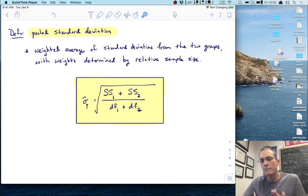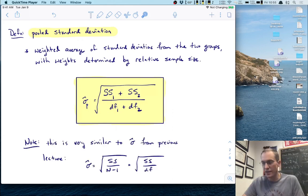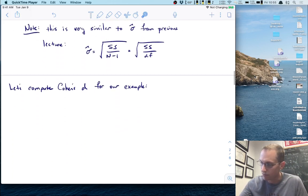This should be natural - you may remember from our previous lecture we defined sigma hat as the square root of SS over n minus 1, which is the same as the square root of SS over df. So to compute effect size we need the difference between the two means and this pooled standard deviation. Let's compute Cohen's d.